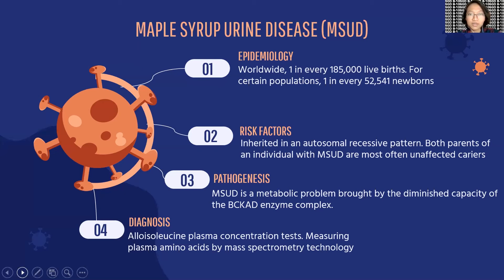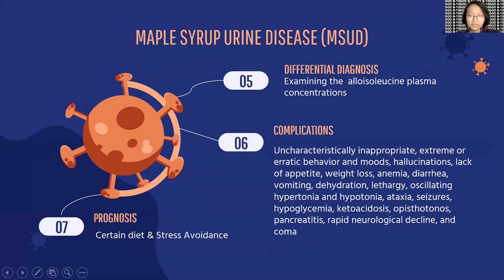Increased branched-chain amino acid (BCAA) levels due to pathogenic defects in certain enzyme segments cause MSUD. MSUD can be diagnosed by mass spectrometry, which can detect elevated plasma leucine, L-alloisoleucine, and isoleucine through extended newborn screening programs. Screening is usually done when an infant is around five days old, at which point they would show several symptoms.